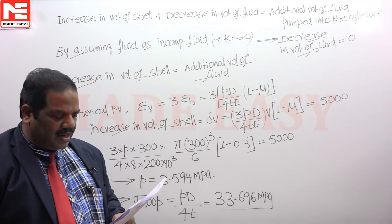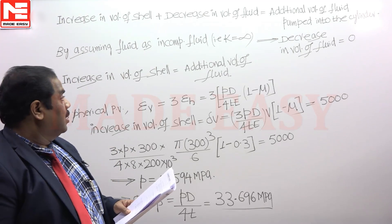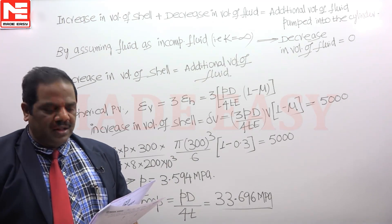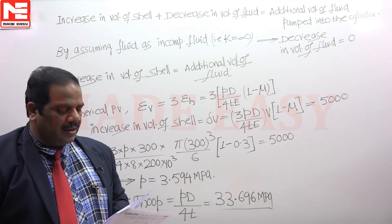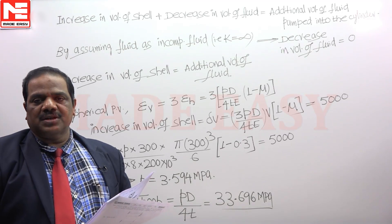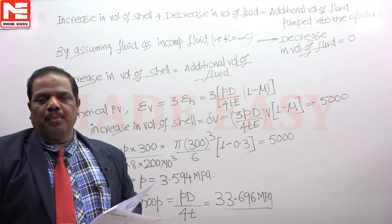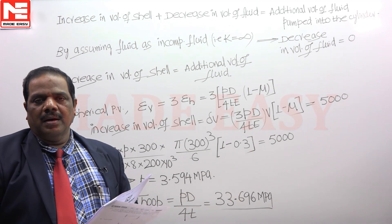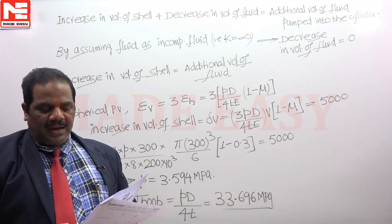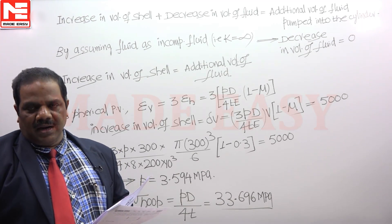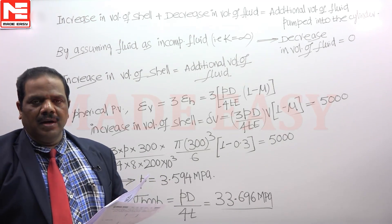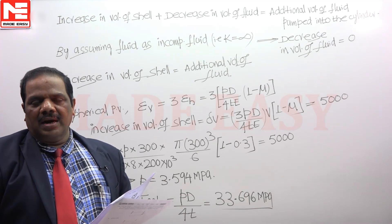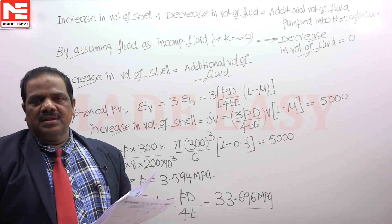One mistake commonly made by students is calculating the decrease in volume of the fluid using a bulk modulus derived from the given Young's modulus and Poisson's ratio. However, those material properties are for the shell material, not the fluid. The bulk modulus of a solid shell cannot be used as the bulk modulus of the fluid. Only if the bulk modulus of the fluid is directly given should you consider the decrease in volume of the fluid. This is an important point to note.